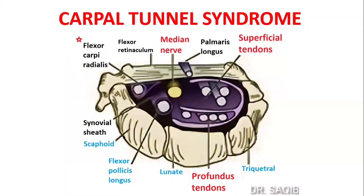Hi, I am Dr. Sakyamansur and let's discuss carpal tunnel syndrome. This is the most common nerve entrapment in the body. The carpal tunnel is bounded posteriorly by the carpal bones and anteriorly by the flexor retinaculum.